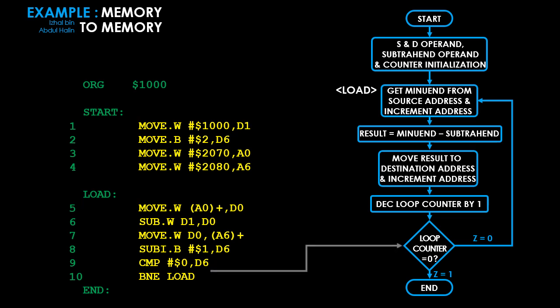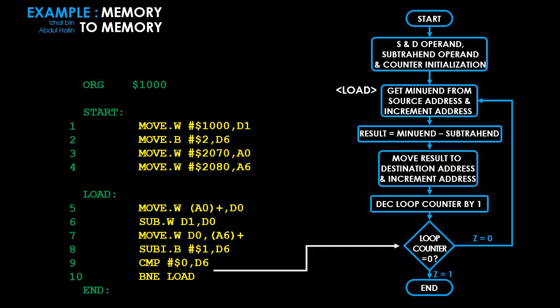As long as the counter value is not zero, the compare instruction resets the Z flag. The BNE instruction sees this and branches to label 'load'. Once the counter value is zero, the compare instruction sets the Z flag to one; the BNE instruction checks the Z flag, sees it is one, and the program does not branch to 'load' — it ends. This shows how to branch based on an operand's value using CMP followed by BNE.